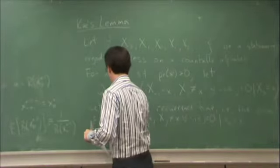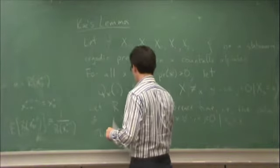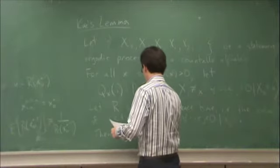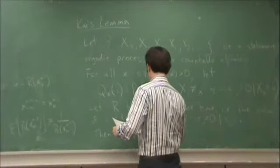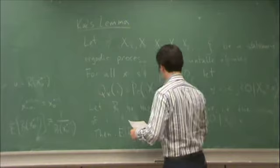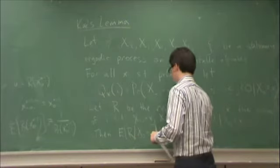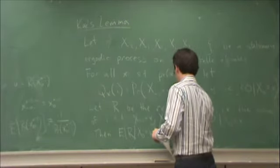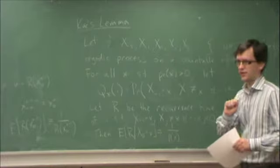Then, the expected value of R given that x_0 is equal to x, is equal to 1 over P(x). There we go, there's the statement of Kac's Lemma.